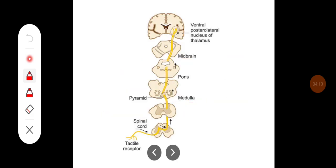Pain and temperature sensations are carried by the anterolateral spinal tracts — the lateral spinothalamic tracts. The first-order neurons form afferent fibers up to the spinal lamina. From there, second-order neurons arise, cross at the spinal cord, ascend in the opposite spinal cord to reach the thalamus, and then third-order neurons relay to the parietal cortex.